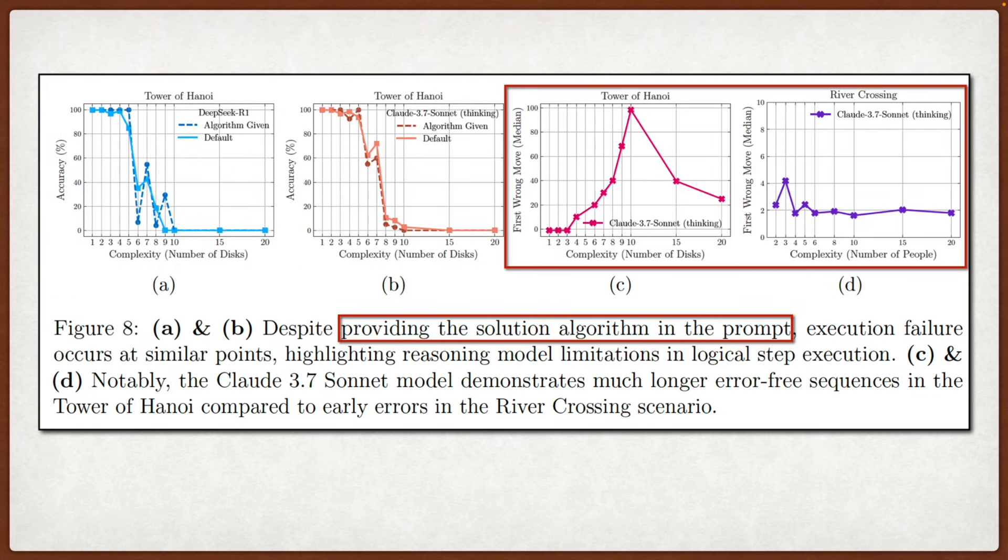Another weird finding in figure 8c and 8d is that models show very different failure patterns across puzzles. Claude can make over 100 correct moves in Tower of Hanoi before failing, but can barely make 5 correct moves in River Crossing, suggesting these models might be relying more on memorized patterns than actual reasoning. This discrepancy is hard to explain if the models truly had general reasoning capabilities, and it points to the possibility that performance on Tower of Hanoi benefits from it being a well-known puzzle that appears frequently in training data, while river crossing variants with more than two actor-agent pairs are likely much rarer.